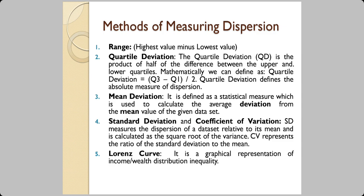There are five methods of measuring dispersion in this chapter. Range is the highest value minus the lowest value. For example, if you want to buy a phone and your range is ₹10,000, the shopkeeper understands you can spend between ₹9,000 and ₹11,000, and shows you models priced at ₹9,000, ₹10,000, and ₹11,000. Other measures include quartile deviation, mean deviation, standard deviation, and coefficient of variation.